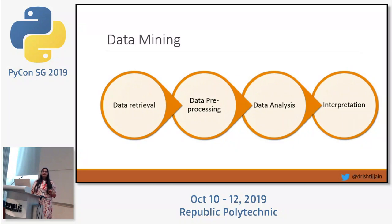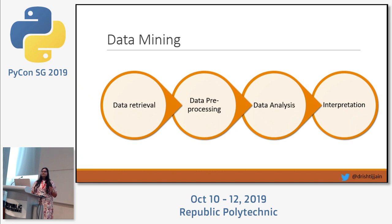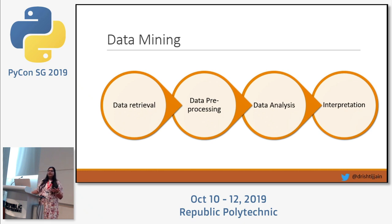The process of data mining has four major steps. The first one is data retrieval — we capture information from various sources. The kind of data we could be working with can be structured, unstructured, semi-structured, or quasi-structured. Collecting all of this data from various sources is the first step of data mining.